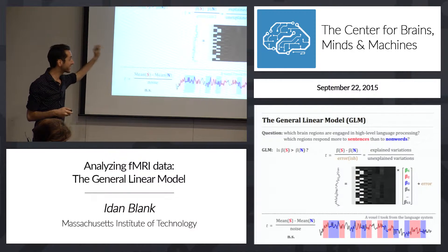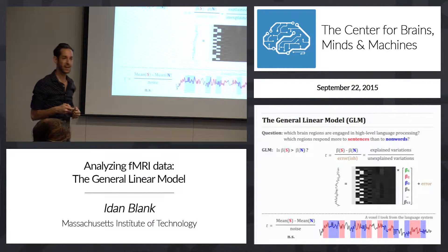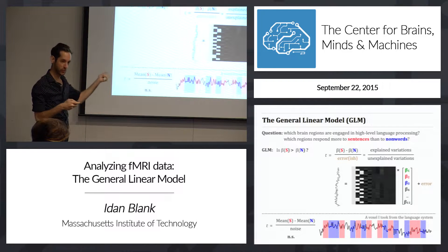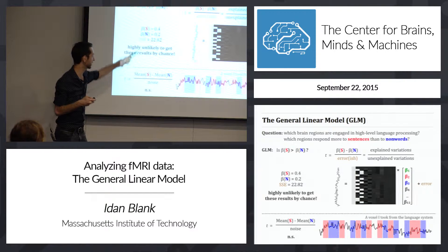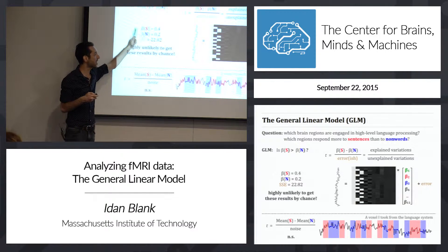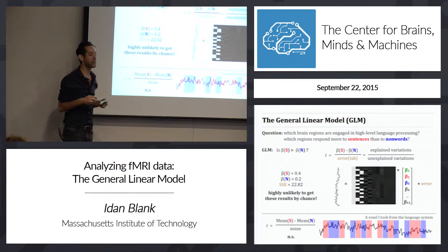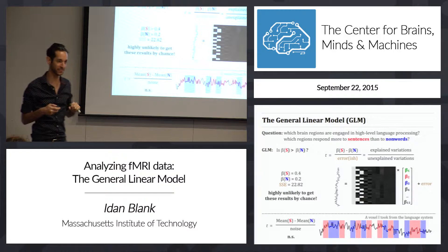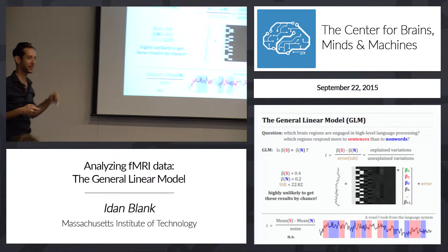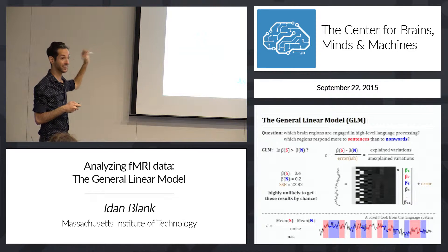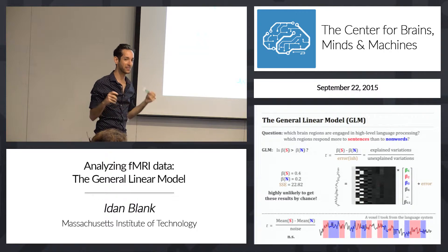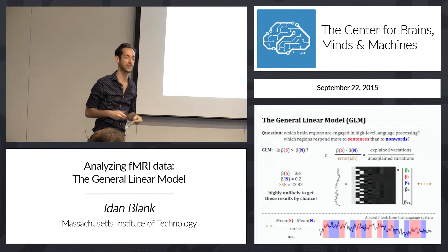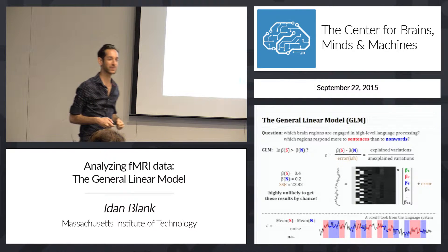When we take the signal from the same voxel from the language system and we have the design matrix with 11 predictors — including our two predictors of interest — the beta for sentences is 0.4 and the beta for non-words is 0.2. When you plug all that into the t-value, you get a t-value that is highly unlikely to occur by chance. This t-value is very significant, meaning the difference between the beta for sentences and beta for non-words is real. That is a voxel that really responds more to sentences than to non-words, which makes sense because it came from the language system.